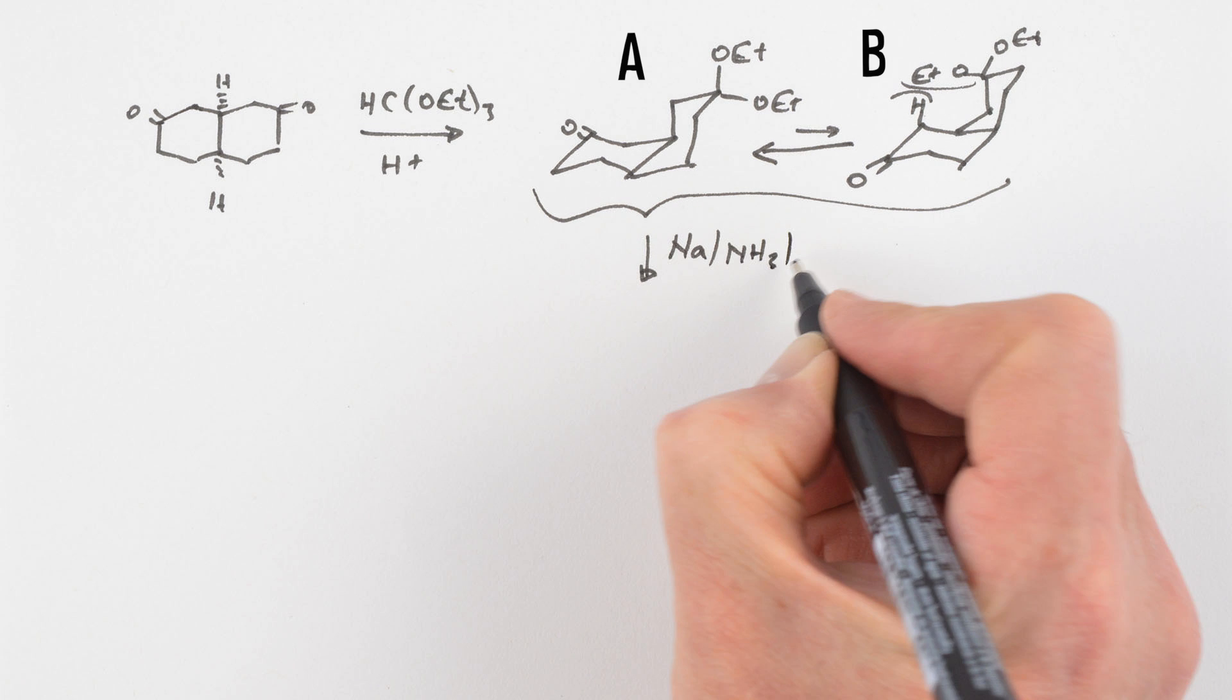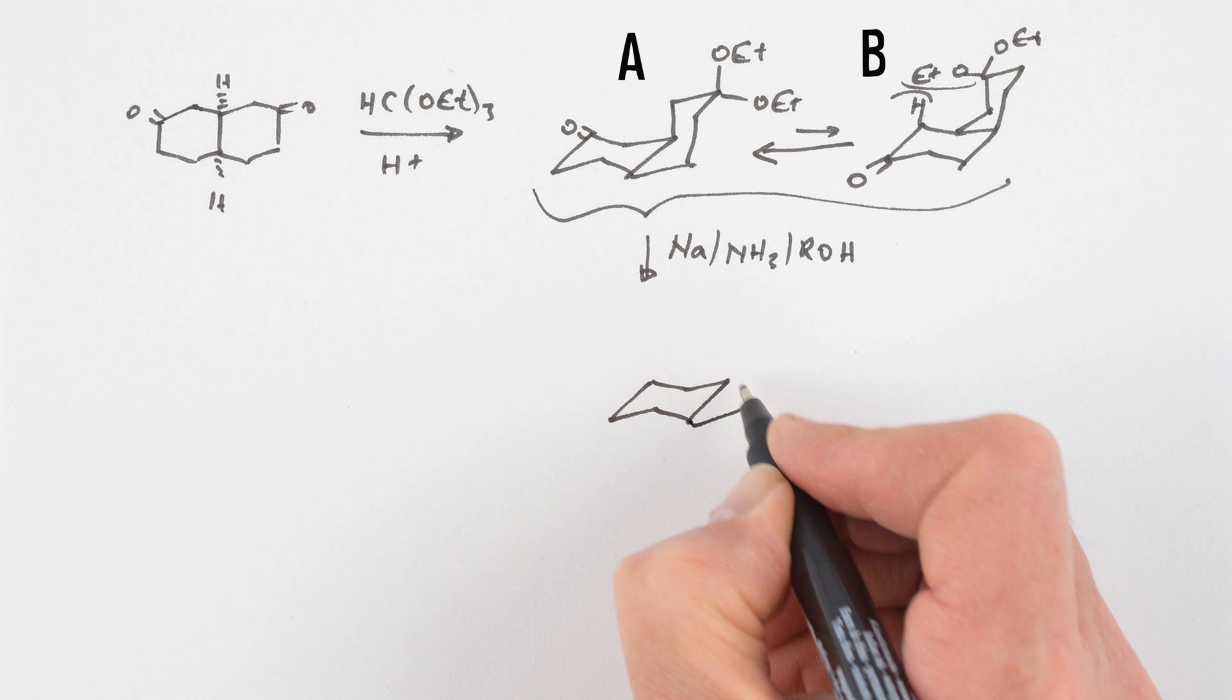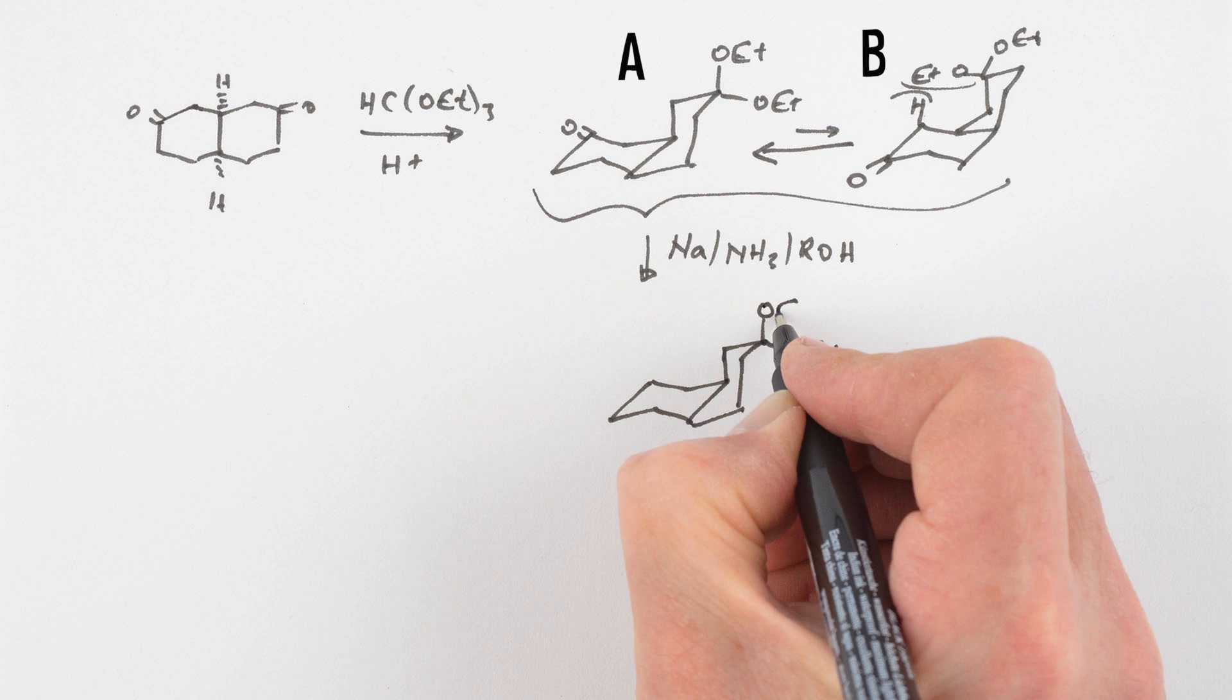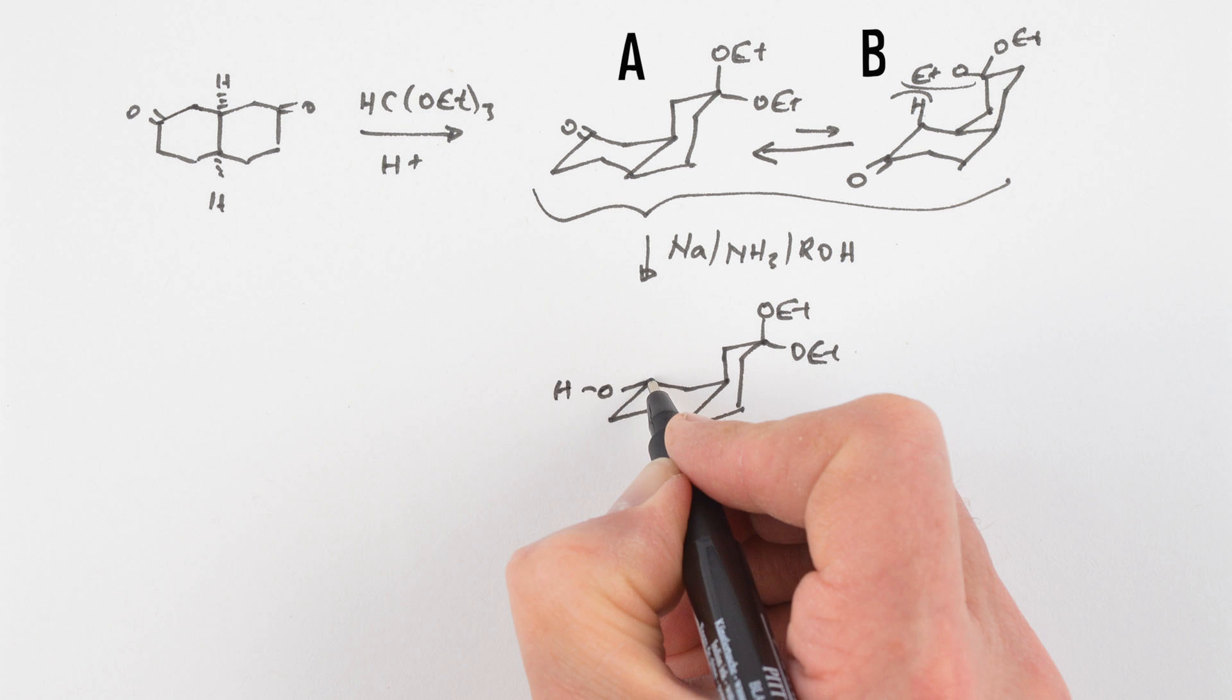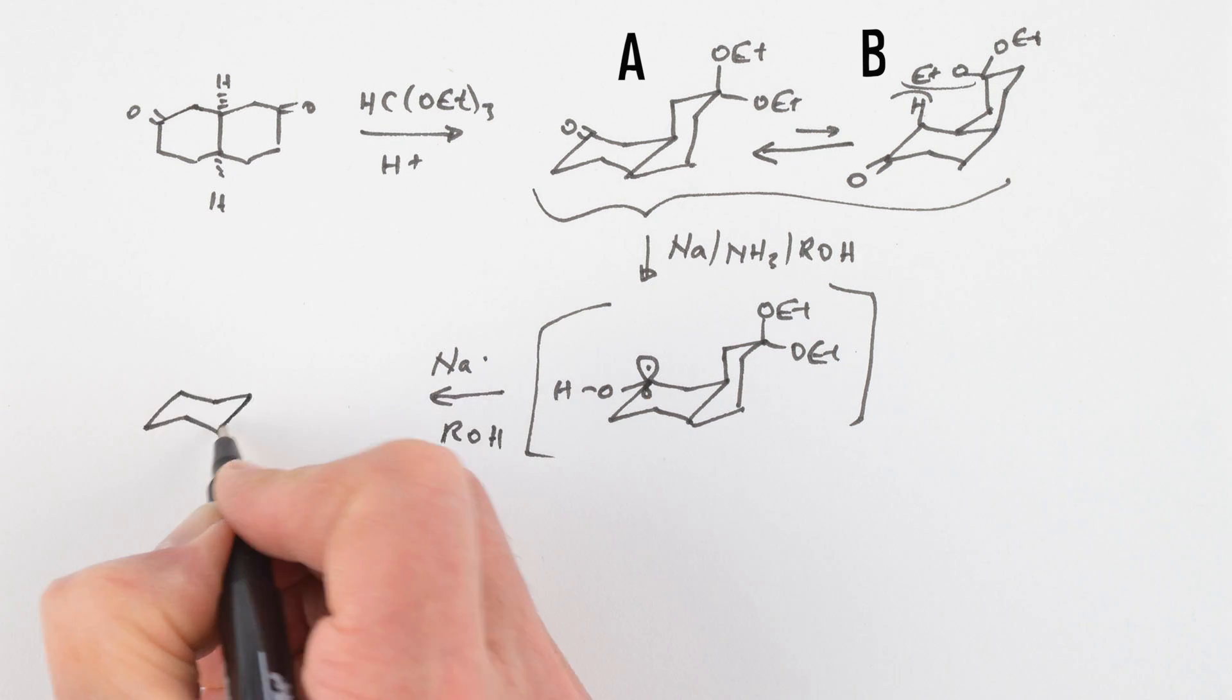The ketone was reduced under thermodynamic conditions with sodium and liquid ammonia in the presence of a proton donor alcohol. This gave the equatorial alcohol.